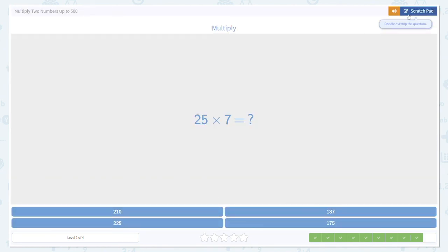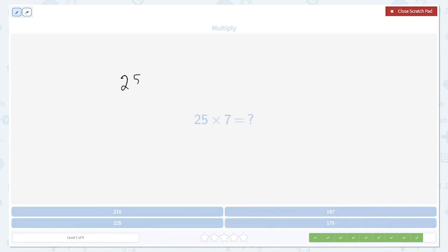And the last one. 25 times 7. 7 times 5 is 35. 5 down there. Carry the 3. 7 times 2 is 14. Plus 3 is 17.